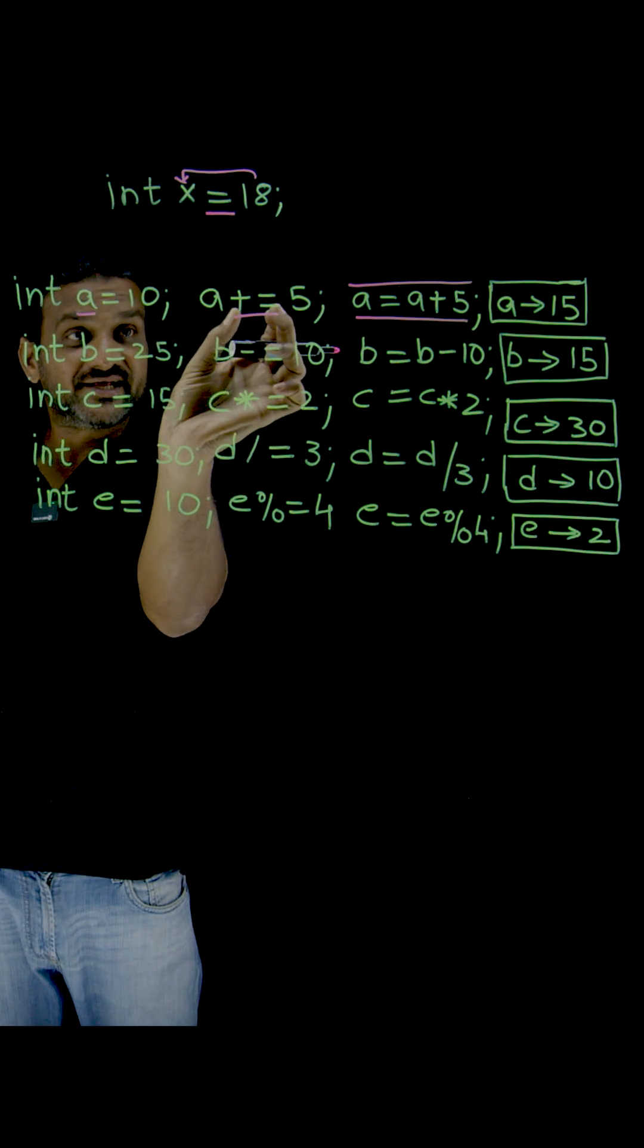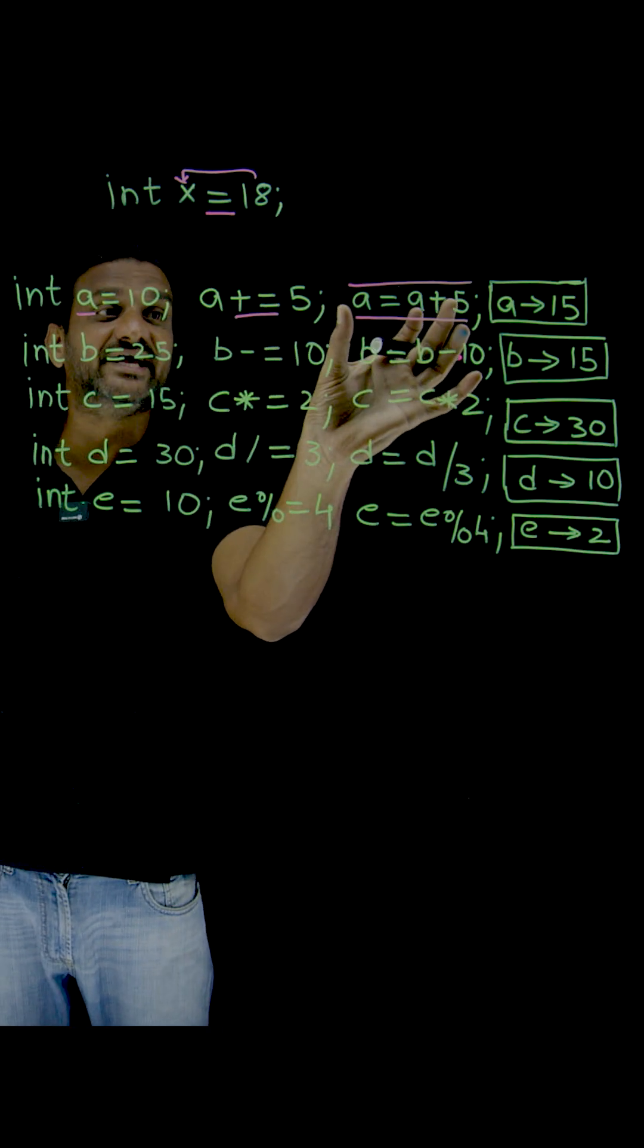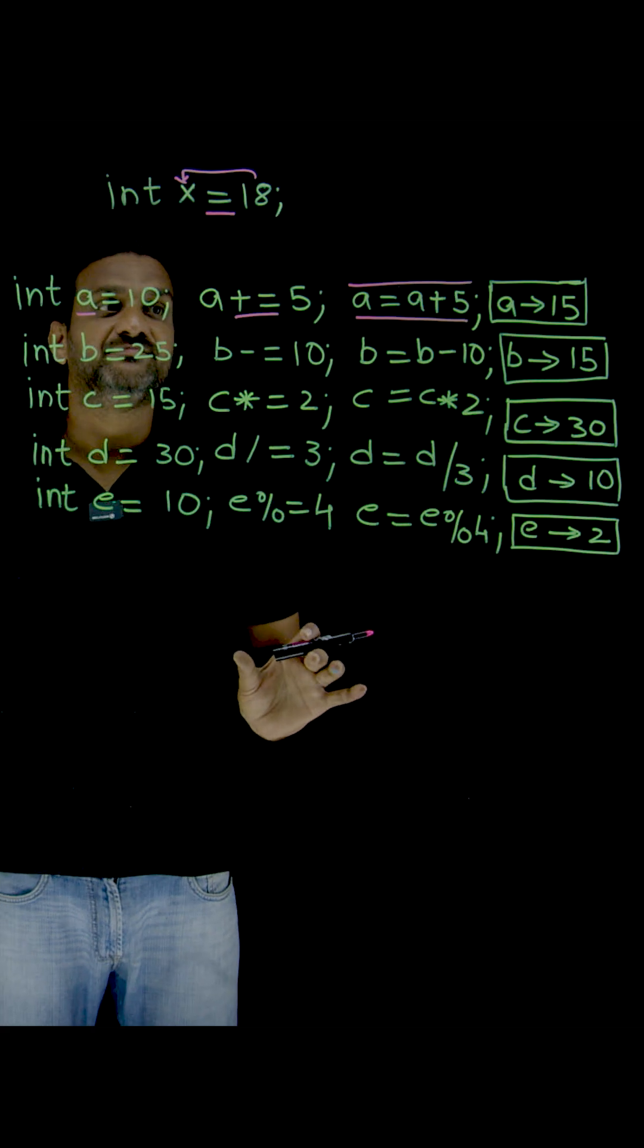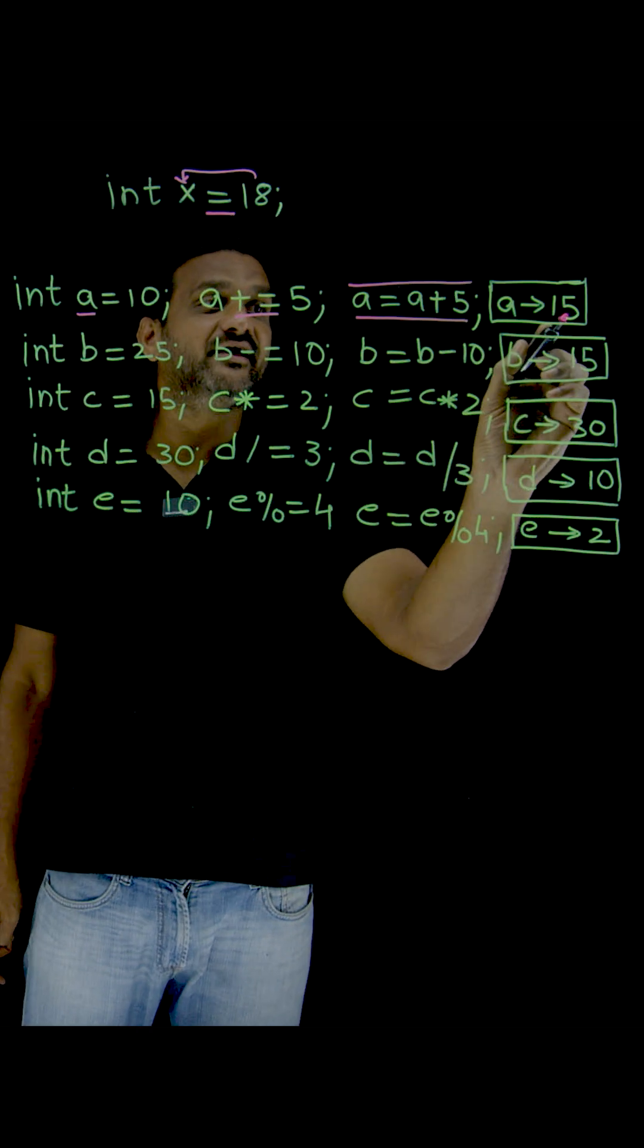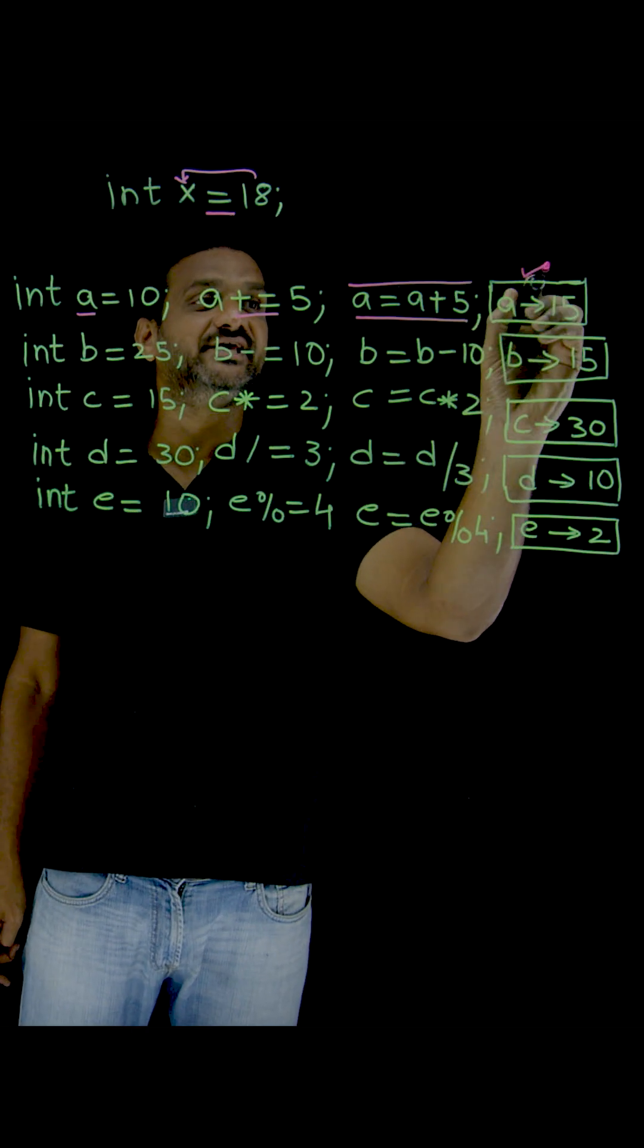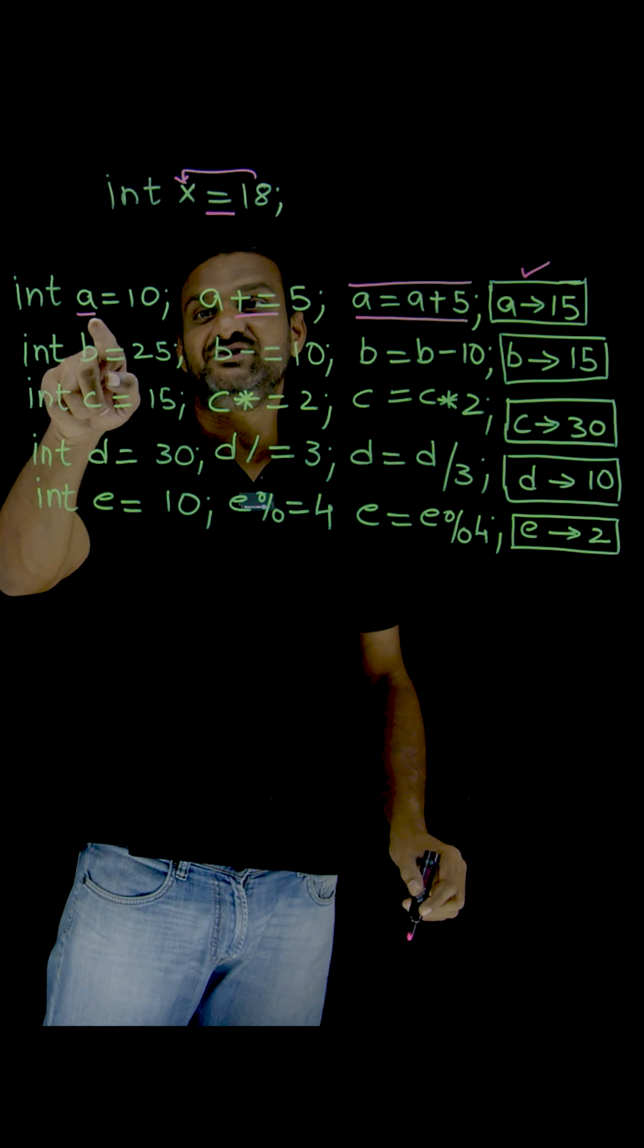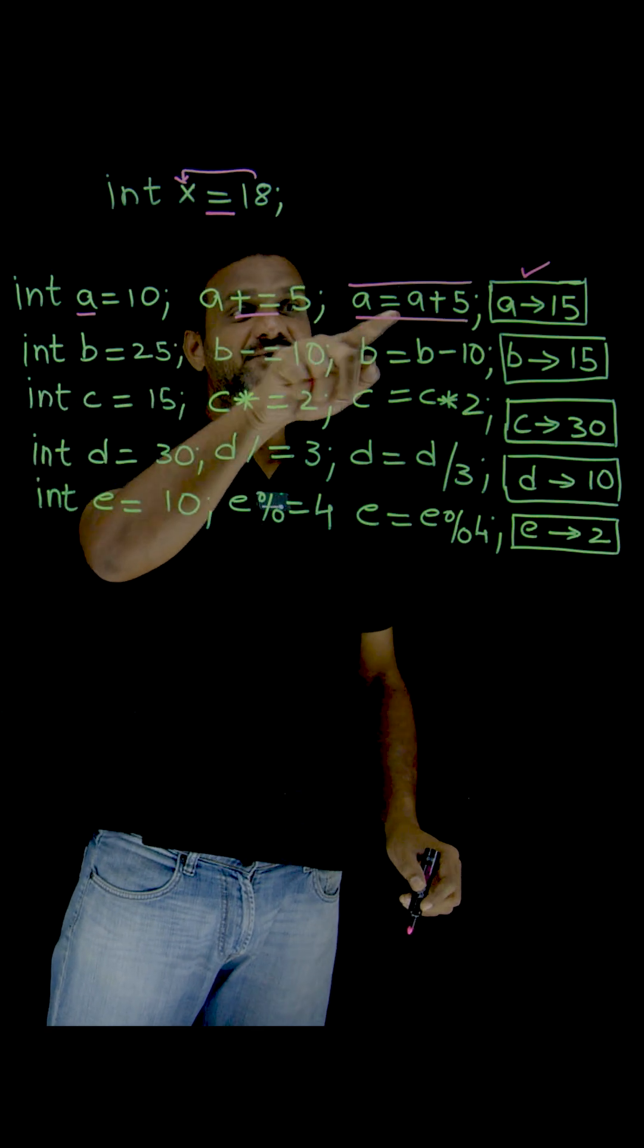Now, what is the new value for a? The new value for a is 15. Previously it was 10, and after this operation it becomes 15.